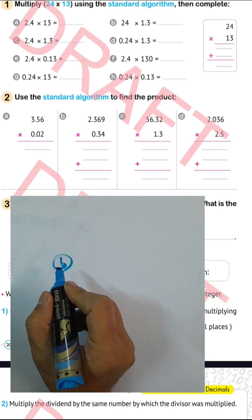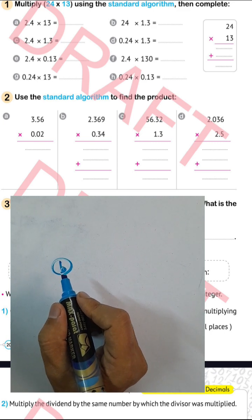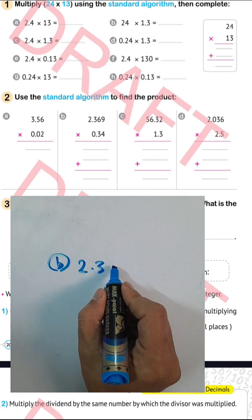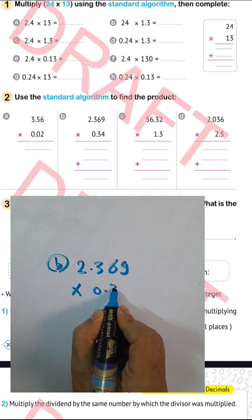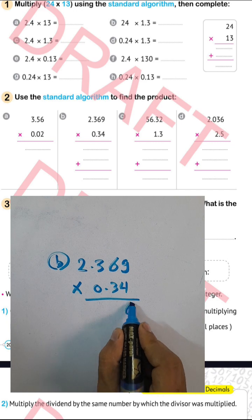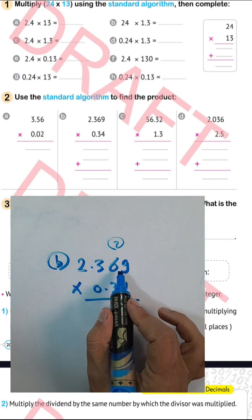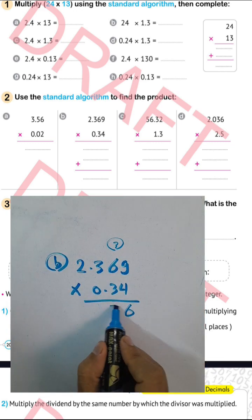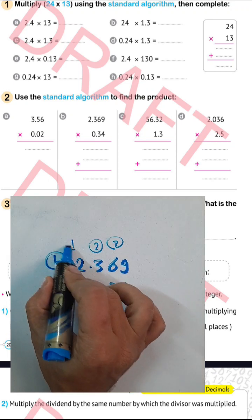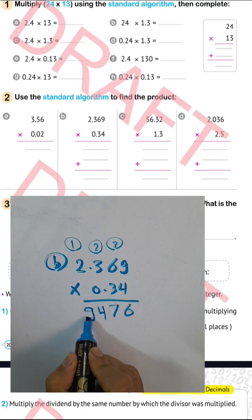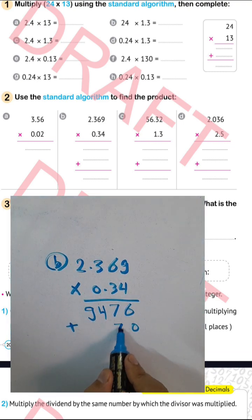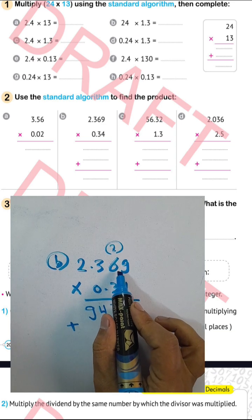Question letter (p) again: 2.369 times 3400. We remove the decimal and compute: 4 times 9 equals 36, write 6 carry 3; 4 times 6 equals 24, plus 3 equals 27, write 7 carry 2; 4 times 3 equals 12, plus 2 equals 14, write 4 carry 1; 4 times 2 equals 8, plus 1 equals 9. Then 3 times 9 equals 27, write 7 carry 2; 3 times 6 equals 18, plus 2 equals 20, write 0 carry 2.